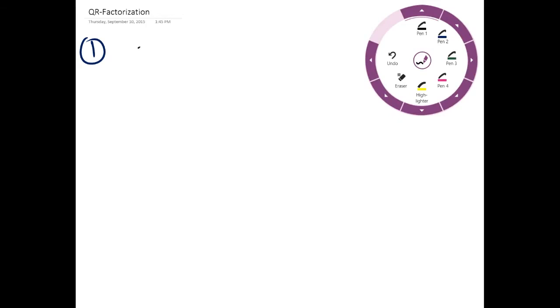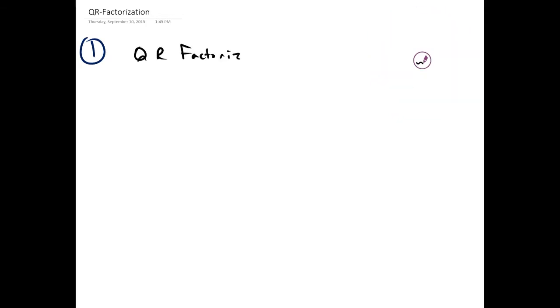Good luck. So we're going to find QR factorization of the matrix A, where A is just a column matrix: 300, -400, 0, 0, 0.